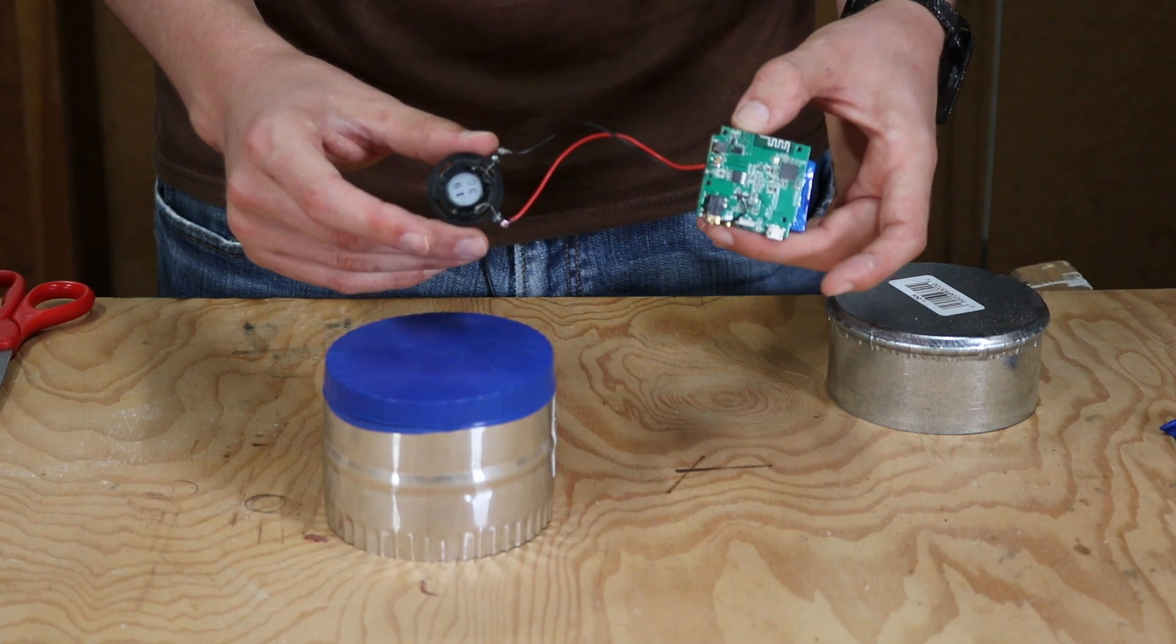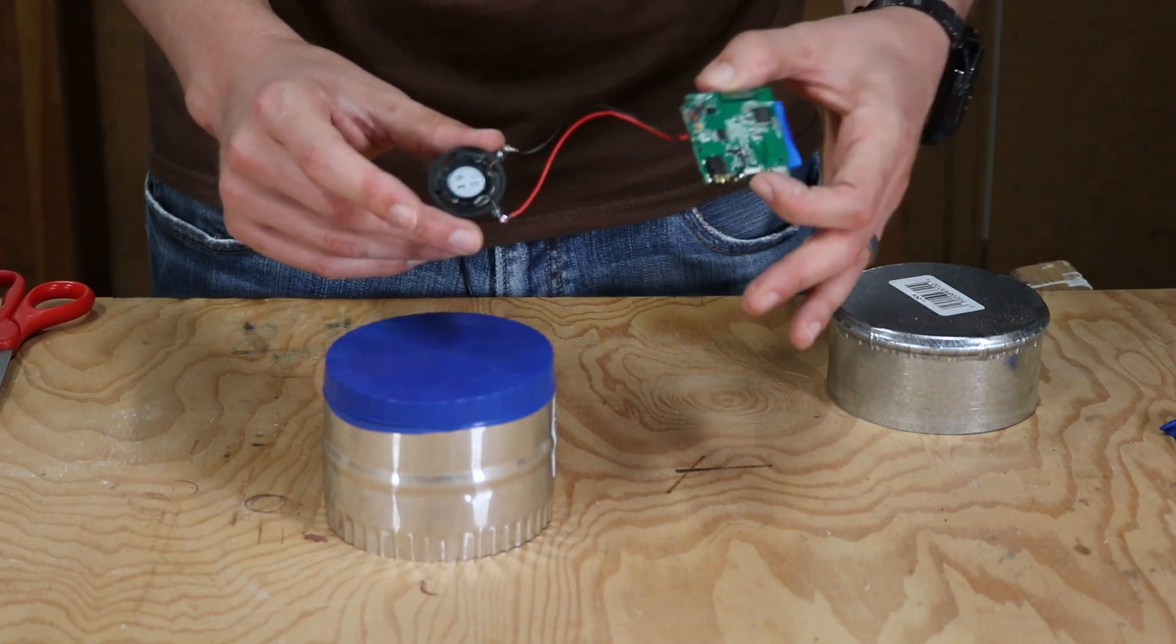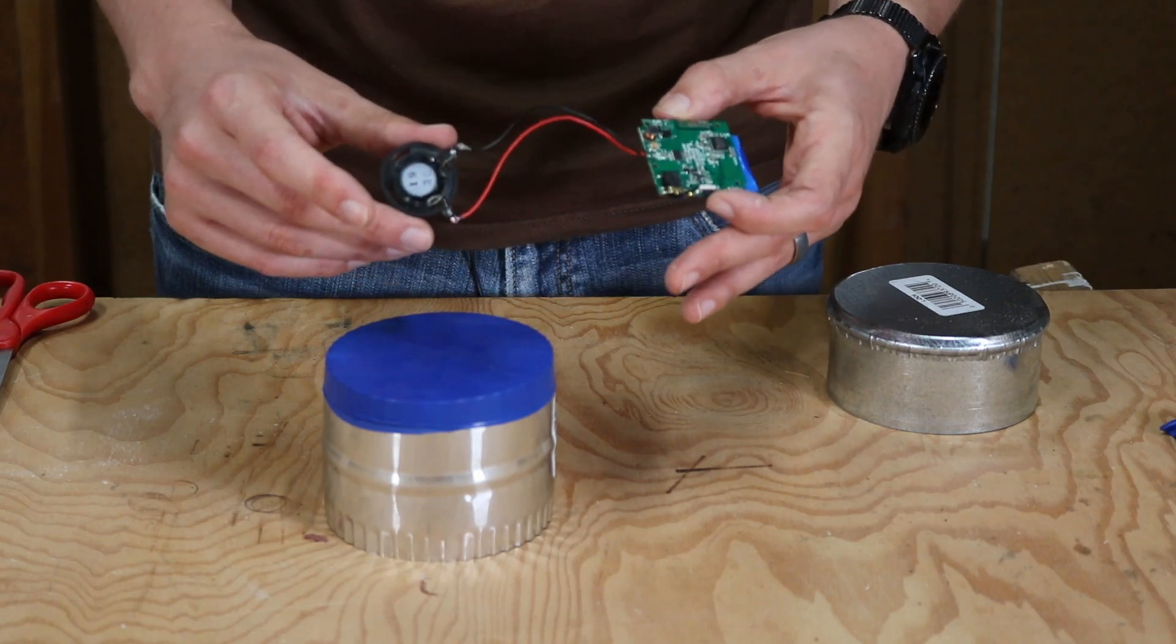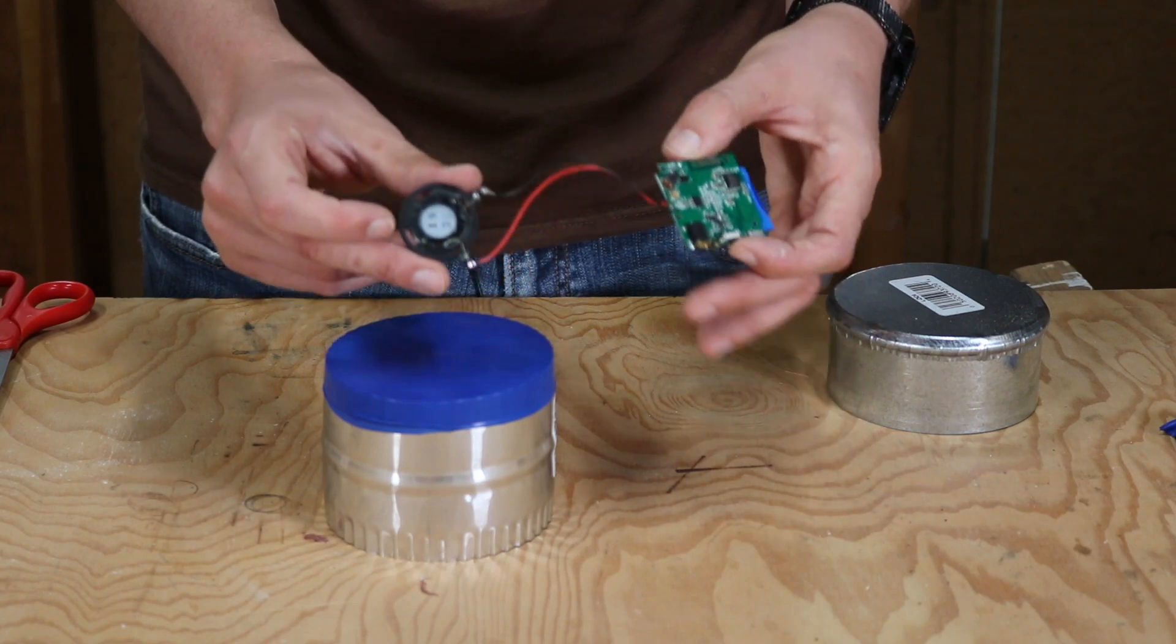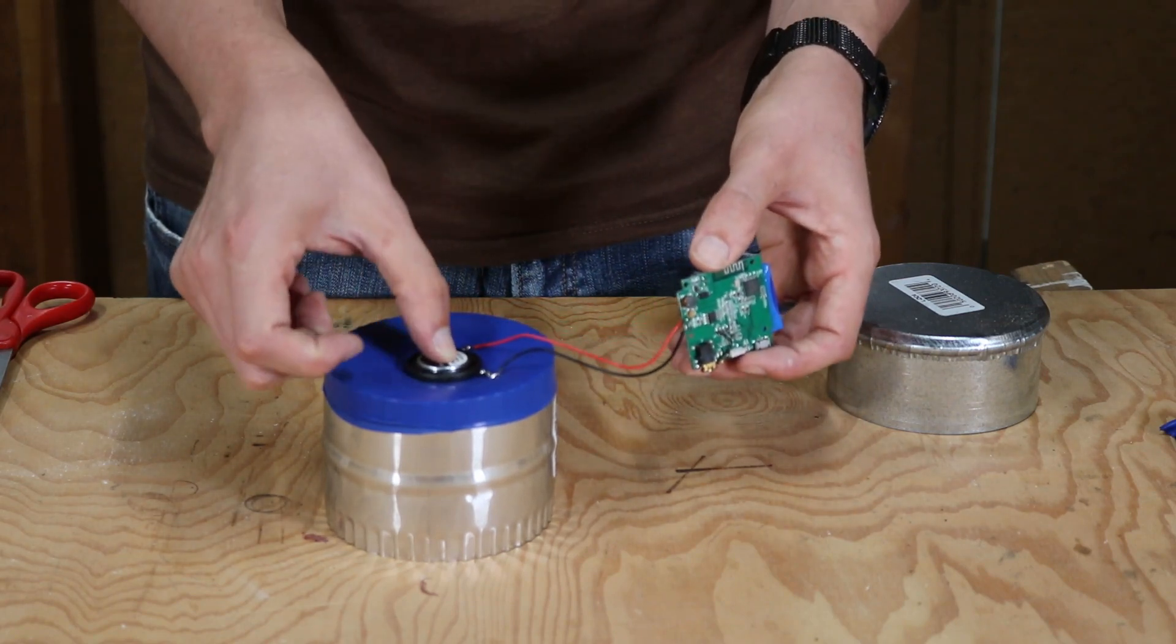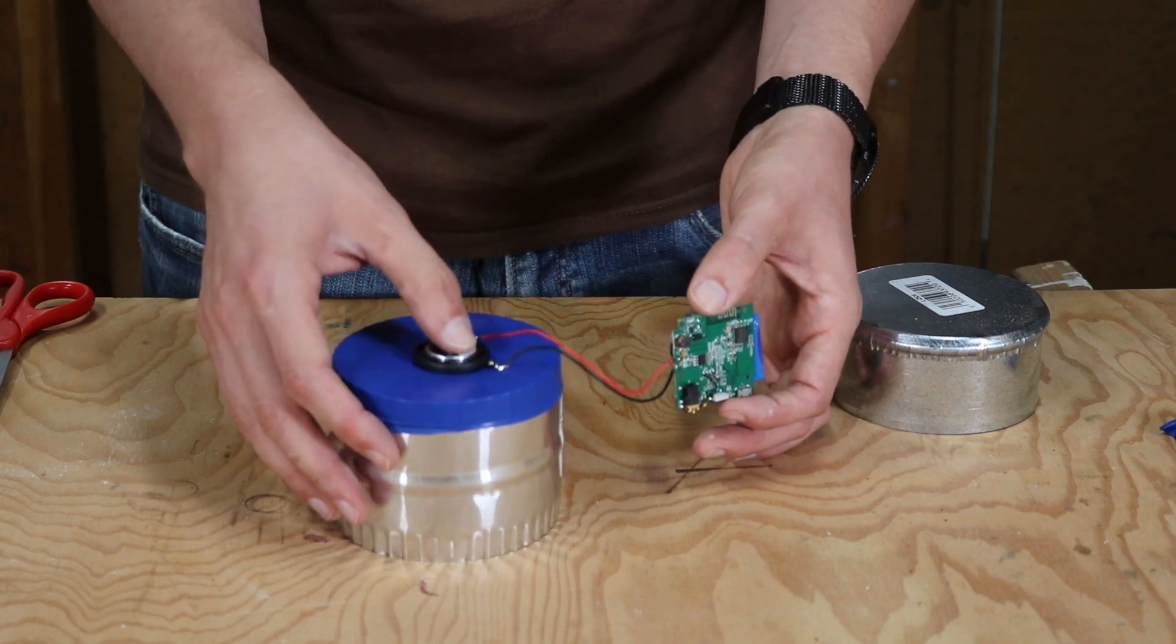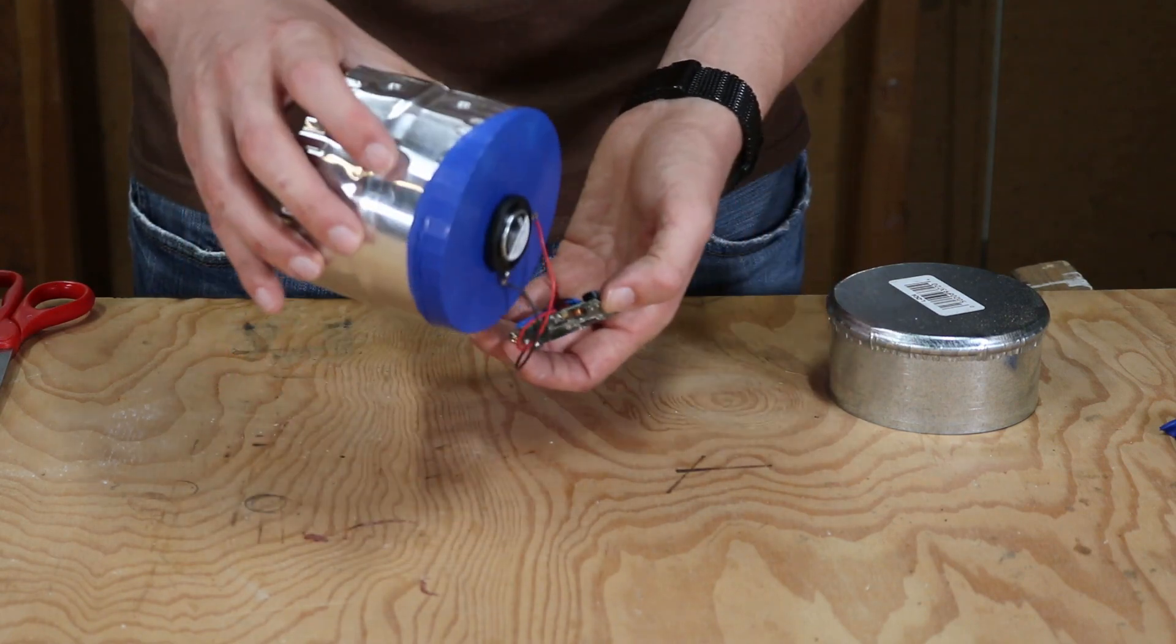So we went and took a Bluetooth speaker, a small one, took it apart to get the guts so we can have a simple way of doing an audio connection, and then applied this small acoustic exciter which we would then put into the center of this membrane. So I already took off the adhesive cover, so now we just have this acoustic exciter and it will stick onto that membrane.